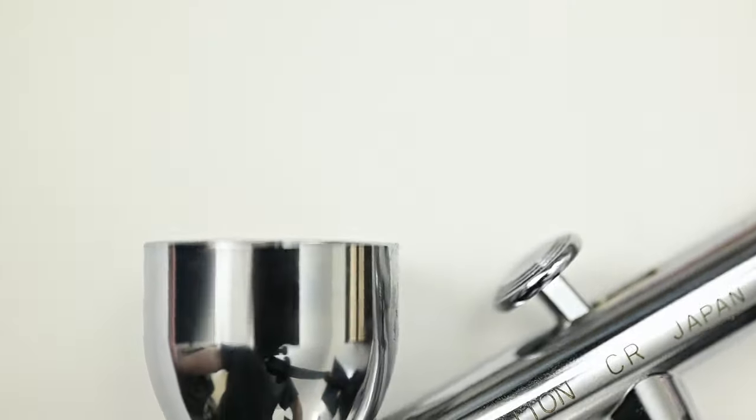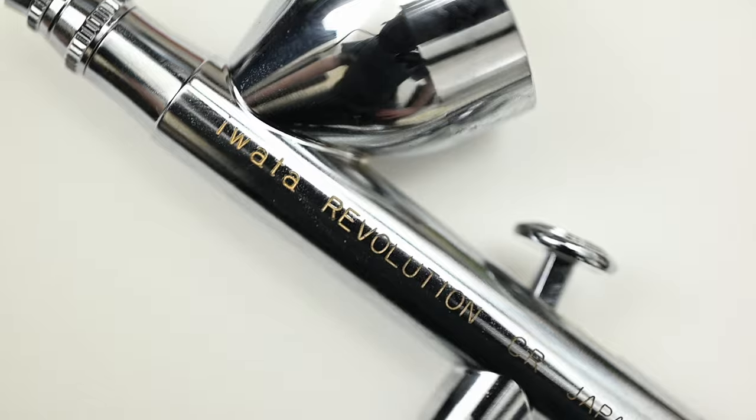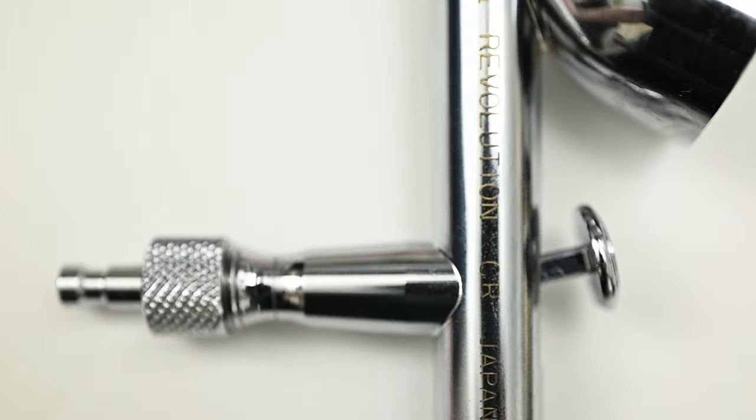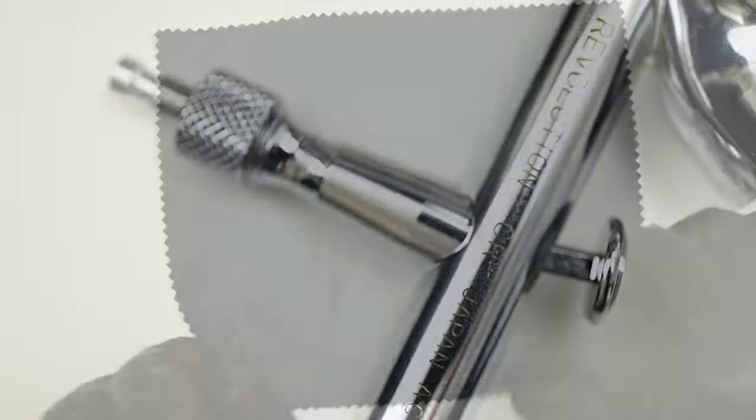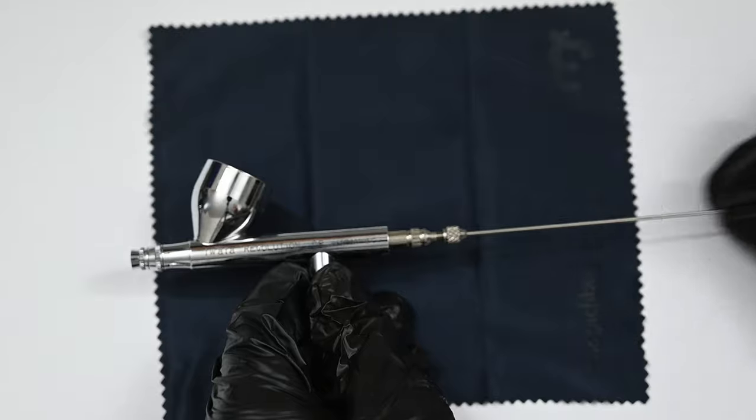With lubrication, I only lube one part on the airbrush, and that's the needle. I found that while lubrication on the trigger and spring make the airbrush feel smoother, over time, like a month, maybe two months, that lube tends to collect gunk and dust, and it just becomes a constant cycle of cleaning and then adding more lube.